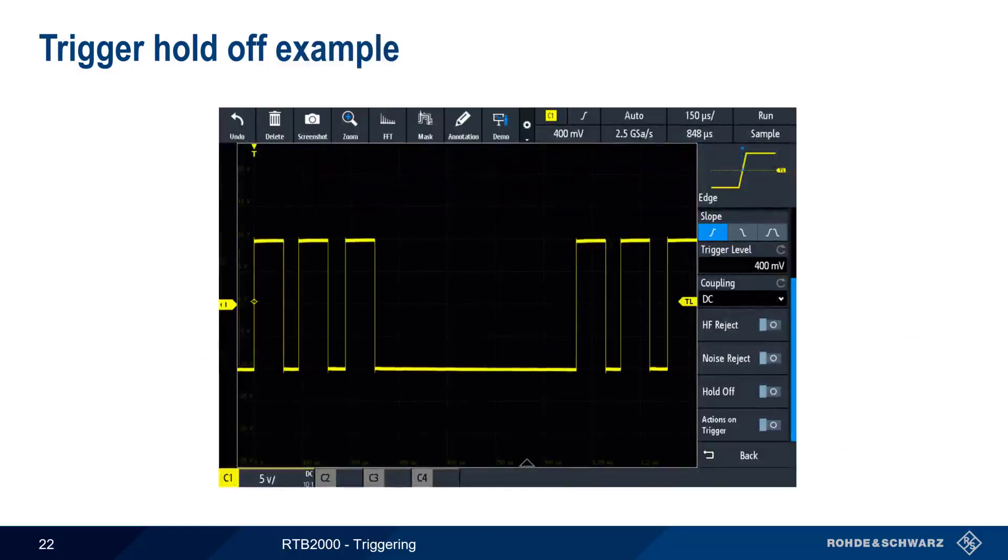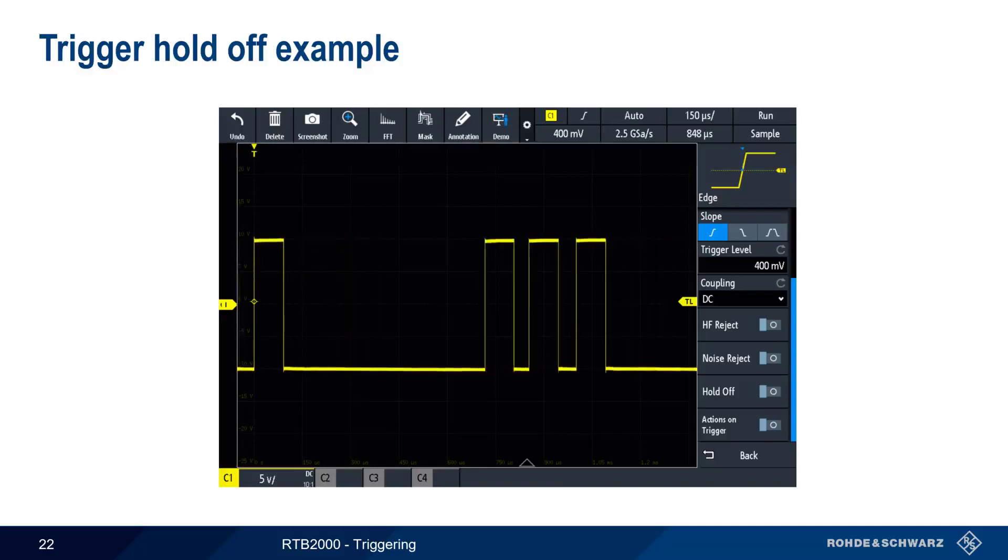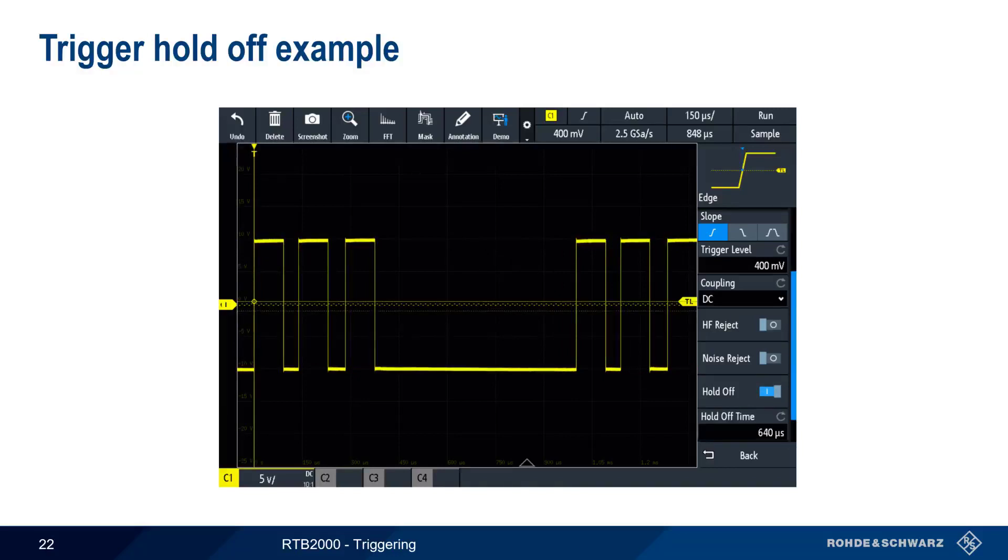Let's look at an example. We'd like to trigger on the first pulse in this three-pulse waveform, but get an unstable result with a standard edge trigger. If we enable trigger hold-off with a properly configured hold-off time, we're now able to trigger only on the start of the three-pulse waveform.